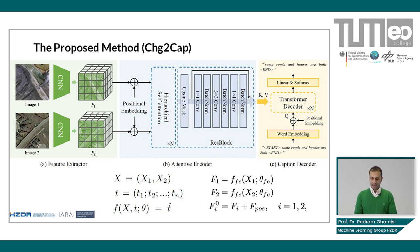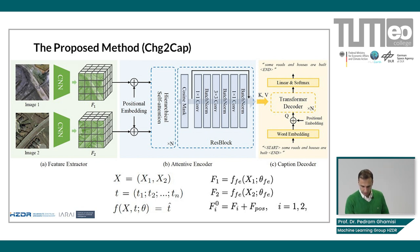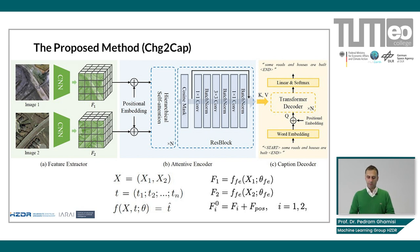After passing image one and image two through the CNN-based backbone networks, we produce F1 and F2. When we add positional embedding to F1 and F2, we produce F0_i, where i is one or two, indicating which image they come from. The whole network is trained by minimizing the cross-entropy loss between the probability vectors of T-hat (the predicted change captions) and the real text tokens.